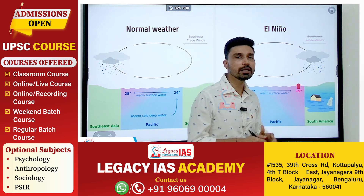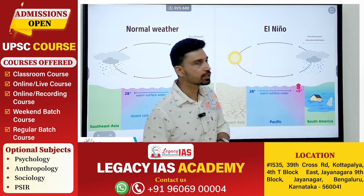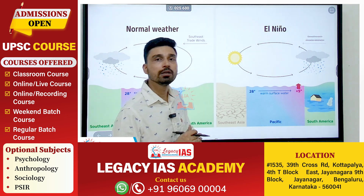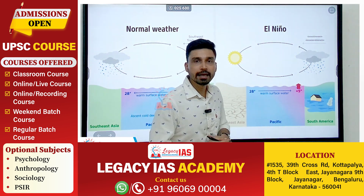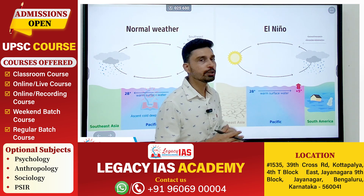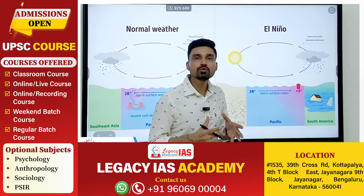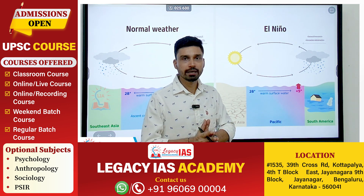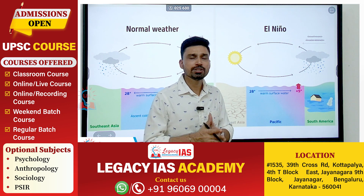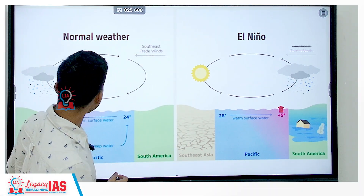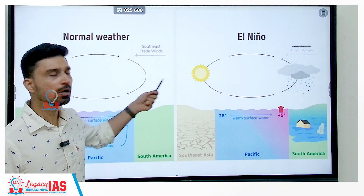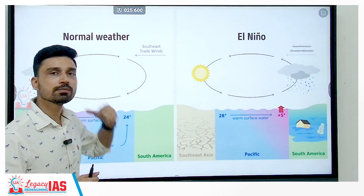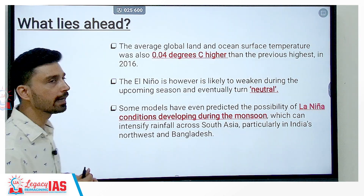During El Niño conditions, the Southeast trade winds become very weak. These trade winds are responsible for bringing the Southwest monsoon to the Indian coast. So if El Niño conditions prevail, the monsoon in India will become weaker and may be delayed, further aggravating the problems related to the summer heating season. Under normal weather conditions, strong Southeast trade winds bring heavy rainfall across Southeast Asia and a much stronger monsoon.